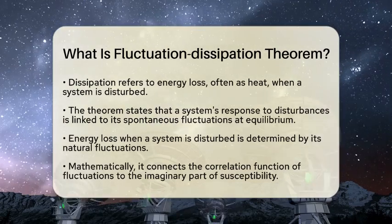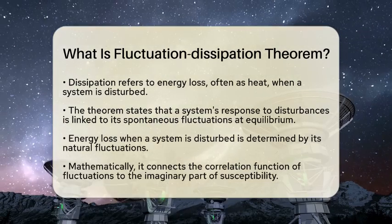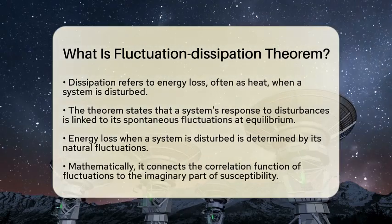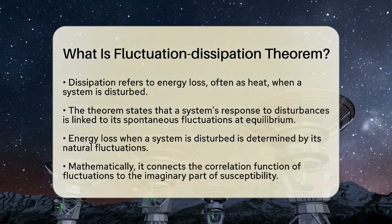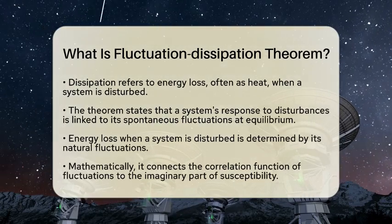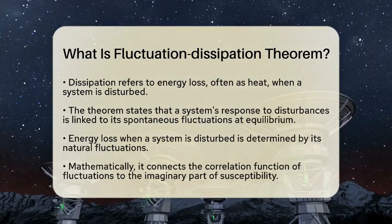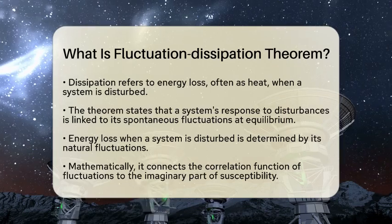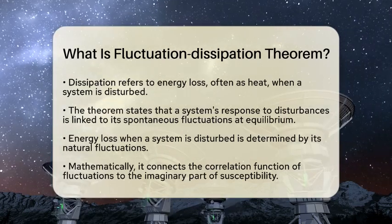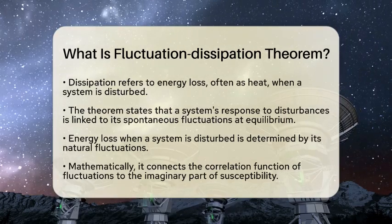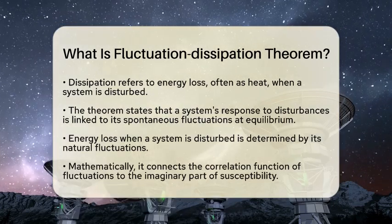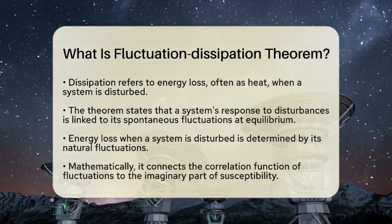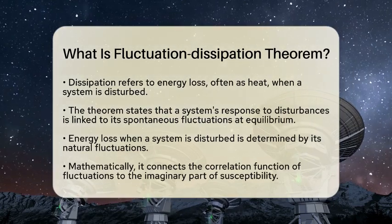Mathematically, this relationship links the correlation function of a system's fluctuations to the imaginary part of the system's susceptibility. The correlation function measures how much a property fluctuates over time, while susceptibility indicates how much energy is lost in response to an external force.